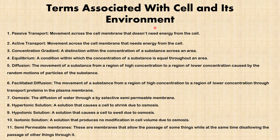We need to familiarize ourselves with key terms for this lesson. Passive transport is movement across the cell membrane that doesn't need energy from the cell. Active transport describes movement across the cell membrane that needs energy from the cell. Concentration gradient is a distinction within the concentration of a substance across an area. Equilibrium is a condition in which the concentration of a substance is equal throughout an area. Diffusion is the movement of a substance from a region of high concentration to a region of lower concentration, caused by the random motion of particles.